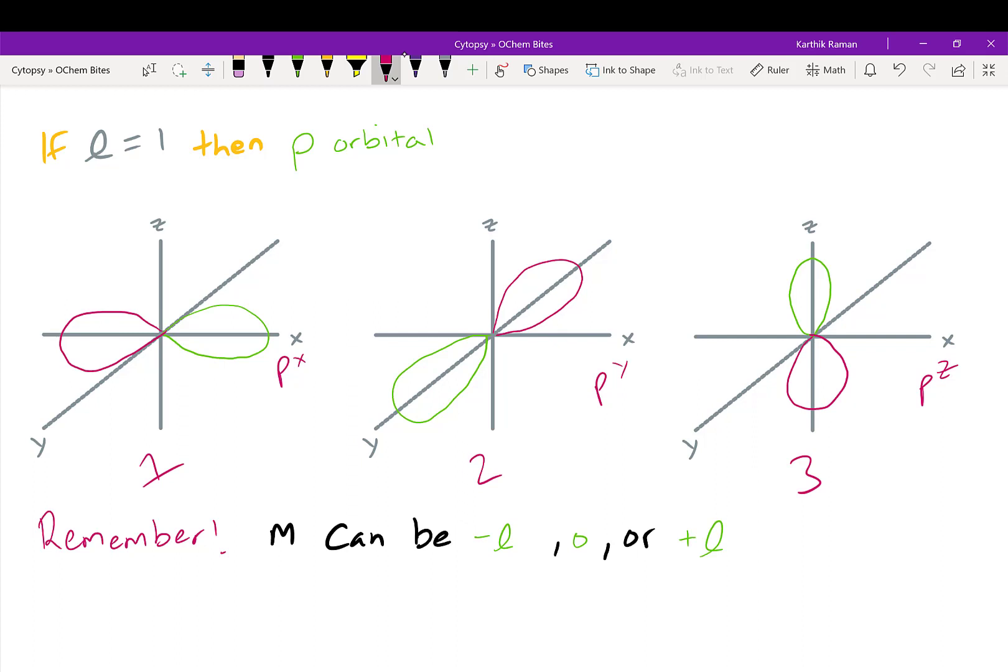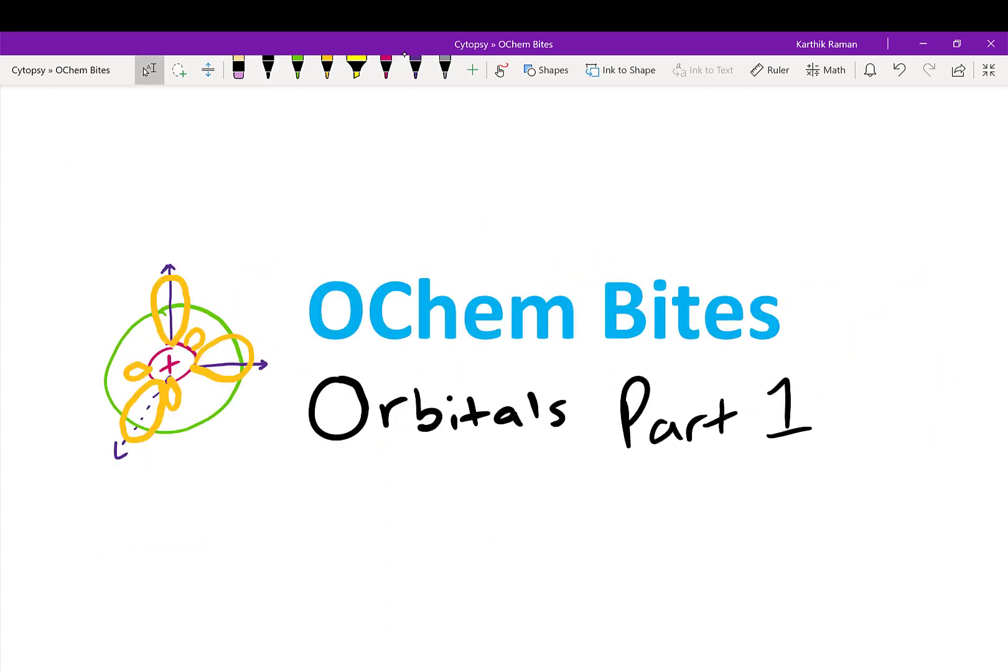However, you might be wondering, well, is p of x the same thing as m equals negative 1, 0, or positive 1? What does it actually mean? That's a little bit more complicated to answer, and it's not part of this lecture. But you should look it up. It's an interesting thing to think about. You usually don't get tested on this within organic chemistry, so it doesn't really matter. But if you're curious, look it up. For p of x and for p of y, m is 50% negative 1 and 50% positive 1. But that's for you to look up and for you to discover.